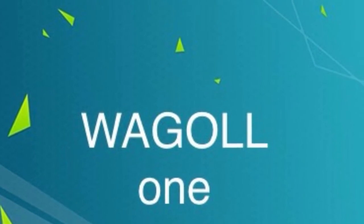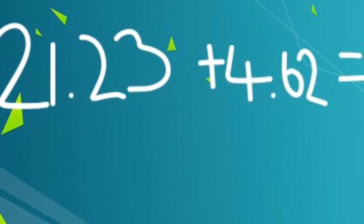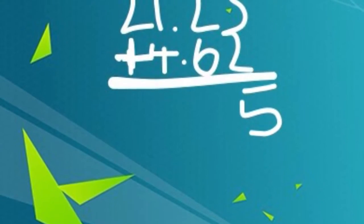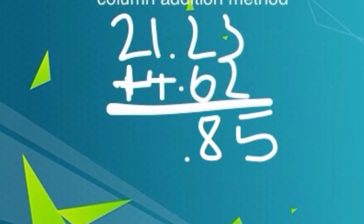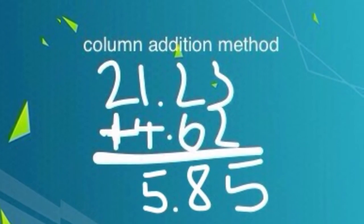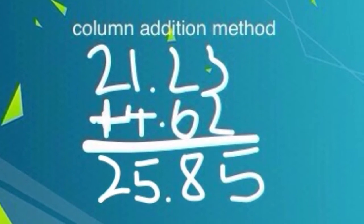Now for addition with decimals. 21.23 add 4.62, column addition method. 0.03 add 0.02 equals 0.05. 0.2 add 0.6 equals 0.8. 1 add 4 equals 5. 20 add nothing equals 20. The answer is 25.85.